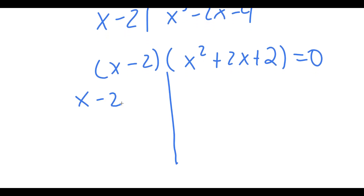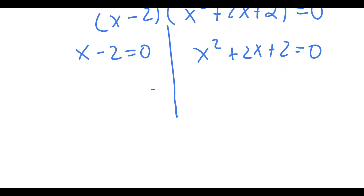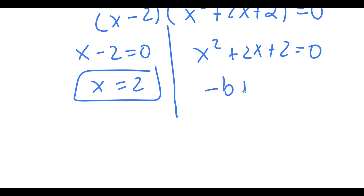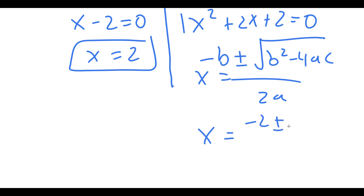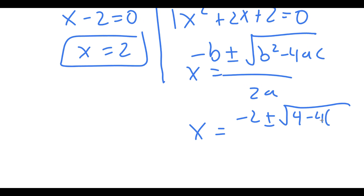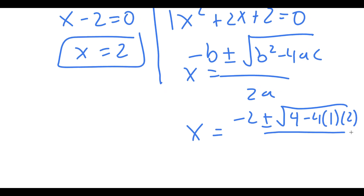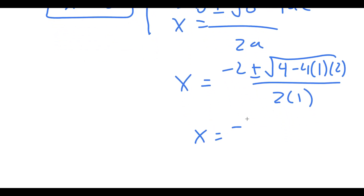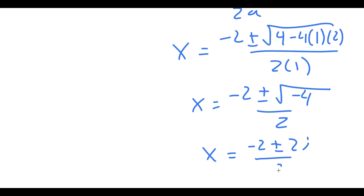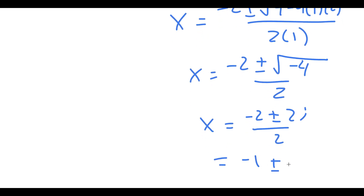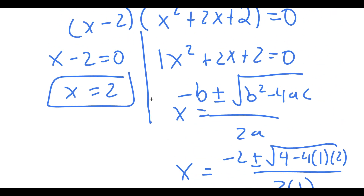This gives two equations: x minus 2 equals 0, so x equals 2; and x squared plus 2x plus 2 equals 0. For the quadratic, using the quadratic formula: x equals negative 2 plus or minus the square root of 4 minus 4 times 1 times 2, all over 2. This equals negative 2 plus or minus the square root of negative 4, over 2, which equals negative 2 plus or minus 2i over 2, giving x equals negative 1 plus or minus i. So my three solutions are x equals 2, x equals negative 1 plus i, and x equals negative 1 minus i.